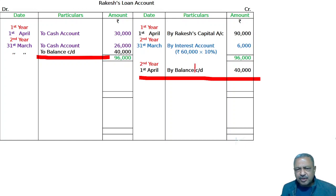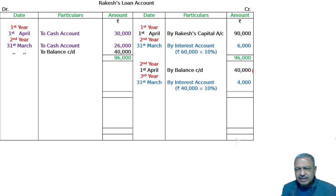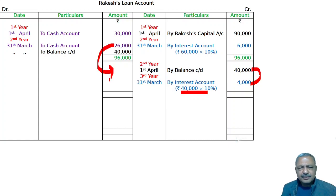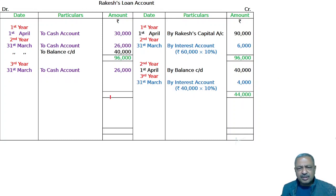This is brought down — 40,000. Third year, 31st March: by interest account, 10%. Second year instalment: 26,000. To bank account — 26,000, to cash account — 26,000. The balance is simply 44,000.